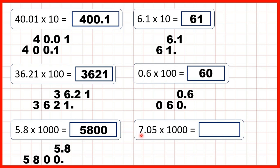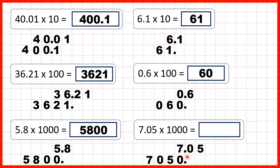Finally we have 7.05 times 1000. So we write the number out, copy down the decimal point, and to multiply by 1000 the digits need to move 3 squares to the left. We can copy the digits 3 squares to the left and now we have an empty square before the decimal point, so we need to write a zero in this empty square. So our answer is 7,050.